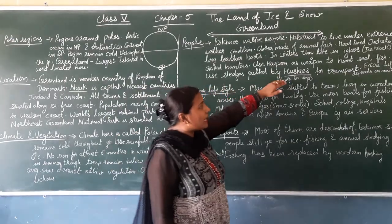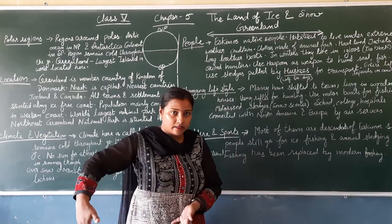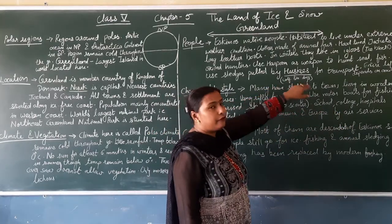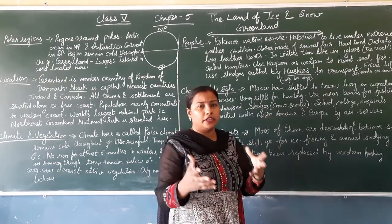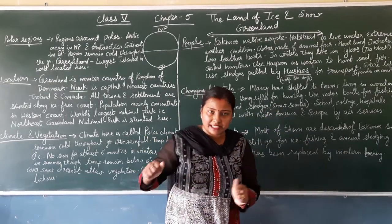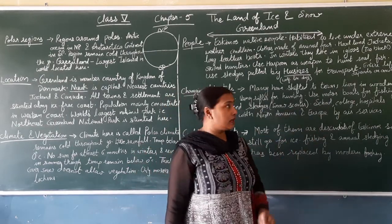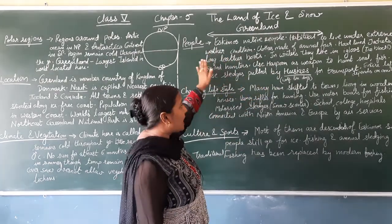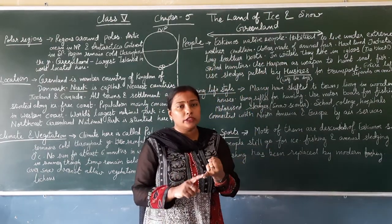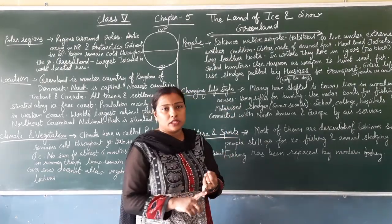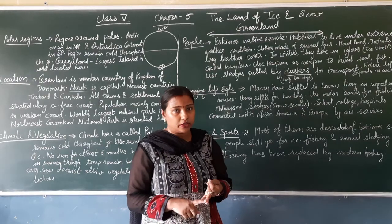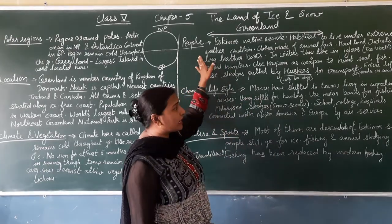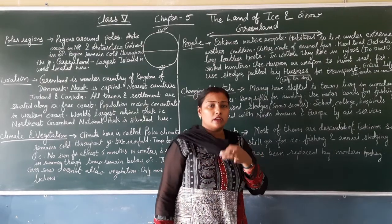They use sledges pulled by huskies for transport. Huskies are wolf-like dogs — about 10–12 dogs are attached to the sledge to pull it. This way they can transport themselves and their goods. The people of Greenland are largely dependent on animals: animal fur for clothing, huskies for transportation, and seal and fish for food. Animals are very useful for them.